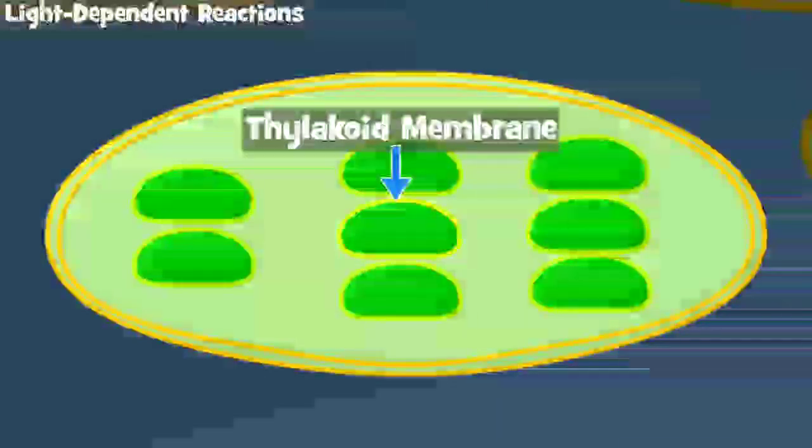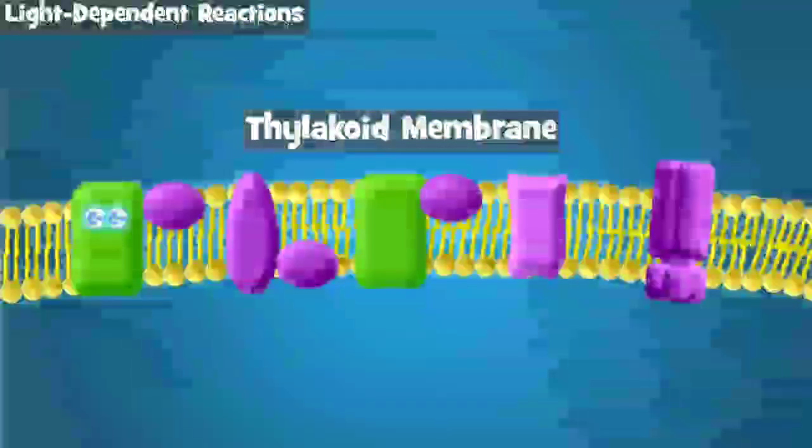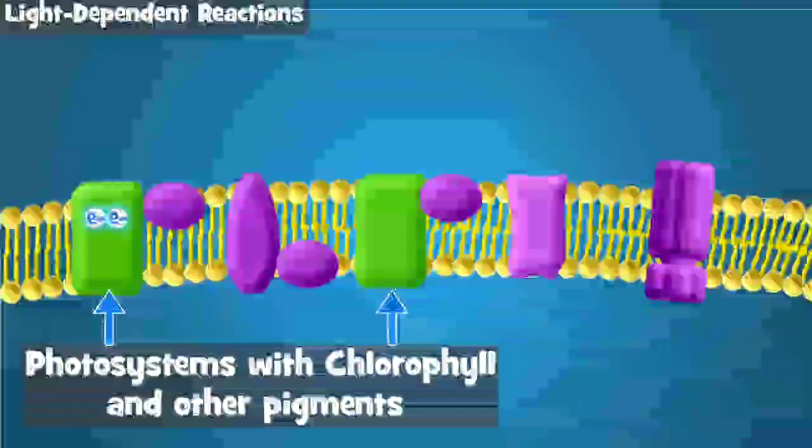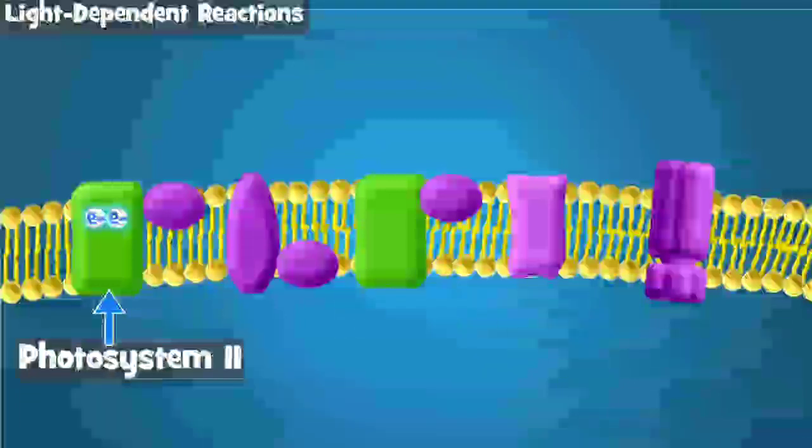Now let's zoom in on the thylakoid and focus on the thylakoid membrane. This is where pigments, such as chlorophyll, are found, and is where light gets absorbed. The pigments are arranged in clusters called photosystems. Let's start with photosystem 2.